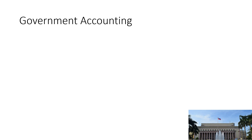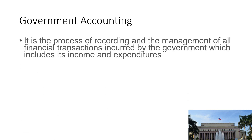What is government accounting? We know that accounting is a process of identifying, measuring, analyzing, and communicating the result of a financial transaction for decision-making. Whereas government is an instrumentality that is able to protect the people or the sovereignty. So government accounting is a process of recording and management of all financial transactions incurred by the government, which include income and expenses.